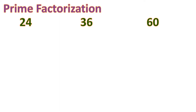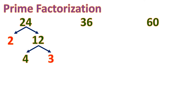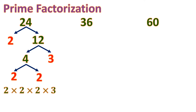Let's do the prime factorization using a factor tree. Starting with 24: we split it into 2 and 12. Since 2 is already prime, we split 12 into 4 and 3. Then 4 can be split into 2 and 2. So 24 equals 2 times 2 times 2 times 3.